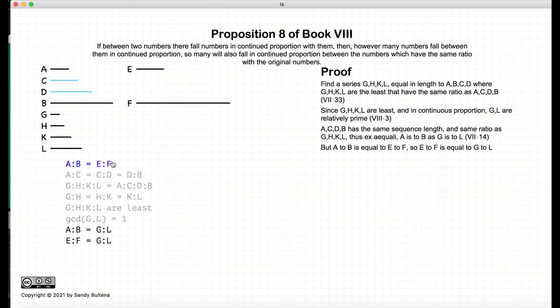So we have a to b is equal to e to f, a to b is equal to g to l, so consequently, g to l and e to f are also equal.